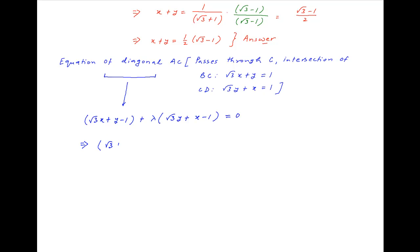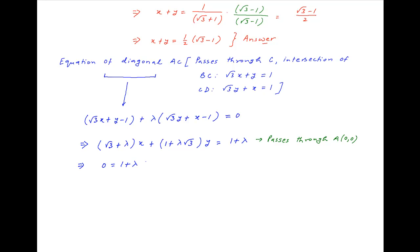Combining the coefficients of x and y, we get (√3 + λ)x + (1 + λ√3)y = 1 + λ. This is the equation of diagonal AC, which passes through point A, that is, the origin. Putting x = 0 and y = 0, we get 0 = 1 + λ, which implies λ = −1.